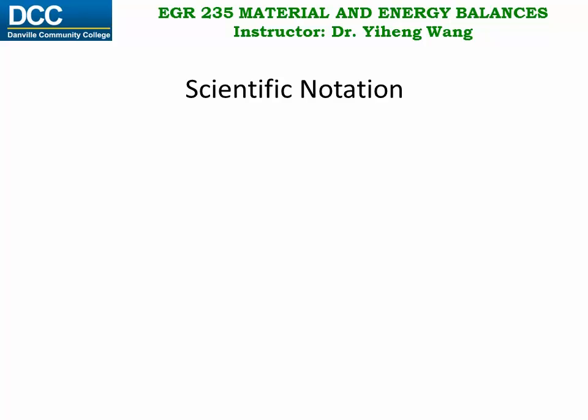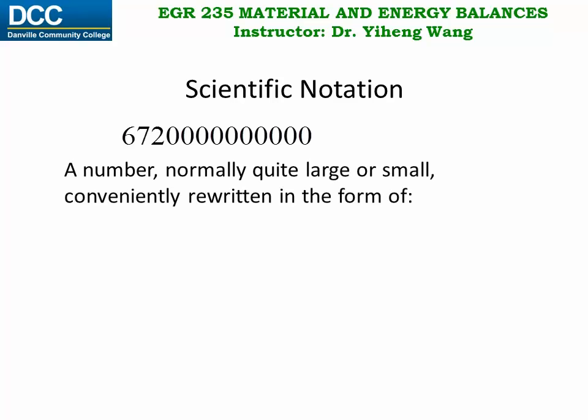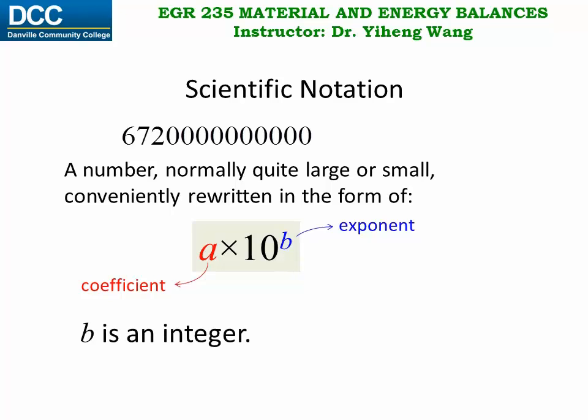For example, when we see a large number such as this, it is difficult to perceive right away just how large it is without spending the time counting all the zeros. Therefore, for convenience, we want to rewrite very large numbers or very small numbers in this form, a times ten raised to the power of b. A is known as the coefficient, and b is the exponent. And this is known as the scientific notation if it follows these two rules that b must be an integer, it could be positive, negative or even zero, and a must be bigger or equal to one and smaller than ten. Therefore, our original number is expressed in scientific notation as 6.72 times ten to the twelfth power, which is 6.72 trillion.